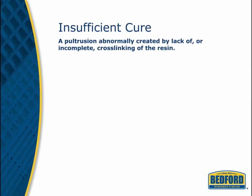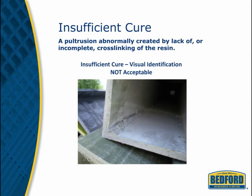When there is a lack of or incomplete cross-linking of the resin, this is called insufficient cure. Visually, it looks like the resin is bubbled and/or the surface may lack the normal pultruded surface gloss or shine. This will affect the structural integrity of the part and is not acceptable.